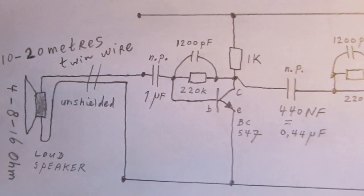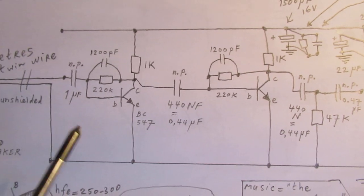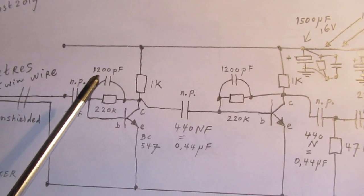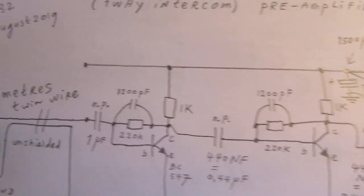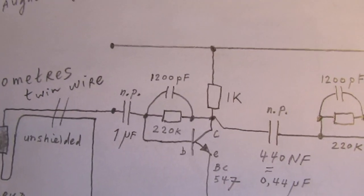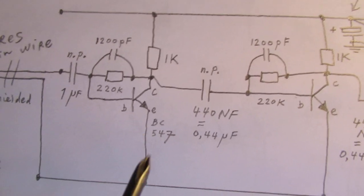And here is the two-transistor pre-amplifier. And important to tell, these two capacitors here, 1200 picofarad, they prevent that the transistors, especially the first transistor, is going to act as a radio detector.